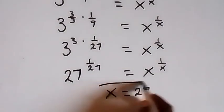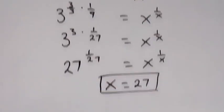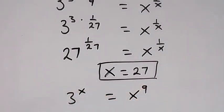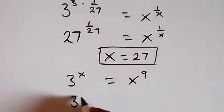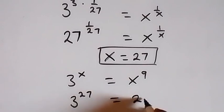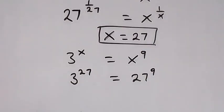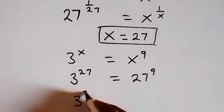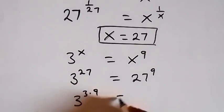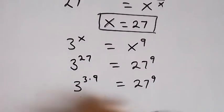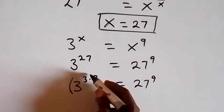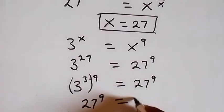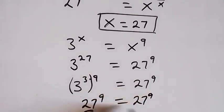We can quickly check: we have 3 raised to power x equals x raised to power 9. When we put 27 in, that is 3 raised to power 27 equals 27 raised to power 9. Then 27 can be written as 3 times 9, so we have 3 raised to power 3 times 9 equals 27 raised to power 9. Separating this, 3 raised to power 3 is 27, raised to power 9, which equals 27 raised to power 9. The left hand side equals the right hand side.